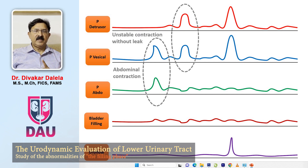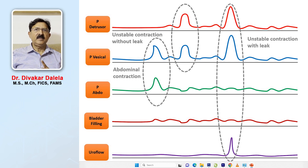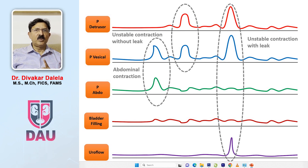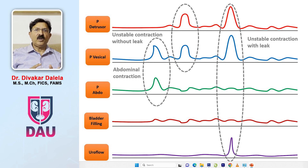In the second elevation, you see there is a sudden rise in P-detrusor and P-vesicle both, but no rise in P-abdomen. This is the unstable contraction in the urinary bladder. But then you see nothing on the uroflowmetry graph — so this is an unstable contraction without leak. In the third one, you will see a sudden elevation in P-detrusor as well as P-vesicle, nothing in the abdomen, but on the uroflowmetry tracing you notice some leakage of urine. So this is an unstable contraction with leak. The point is that you can record unstable contractions without leakage or with leakage, and when you record unstable contractions, there should be no activity in the P-abdominal line.